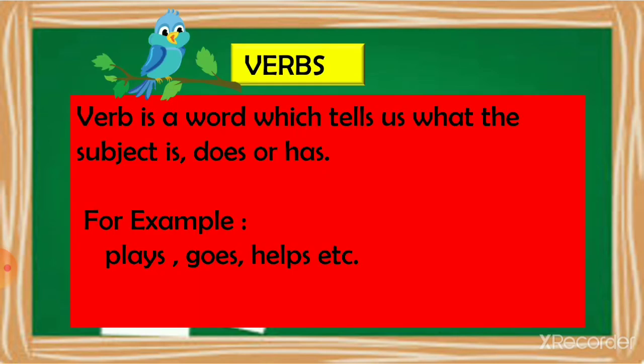So what are verbs? A verb is a word which tells us what the subject is, does, or has. For example: Astha is a girl. Astha plays badminton. Astha has golden hair.